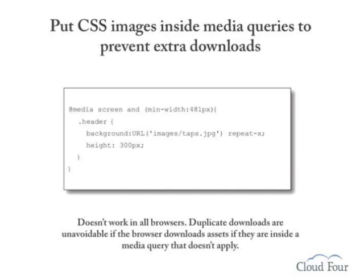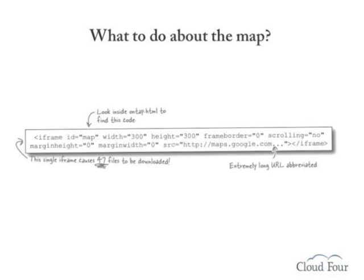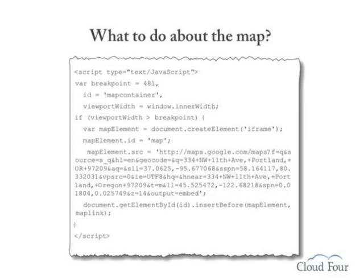For example, a background image for the .header selector enclosed in a media query that only applies to windows wider than 480 pixels — most well-behaved narrower browsers won't download that image. Now, circling back to that map inside an iframe: hiding it with CSS display:none isn't helping. All those heavy assets are still being downloaded even if not shown. A better solution would be JavaScript that inserts the iframe tag into the page only if the browser window is large enough, so those assets won't be needlessly downloaded for narrower windows.